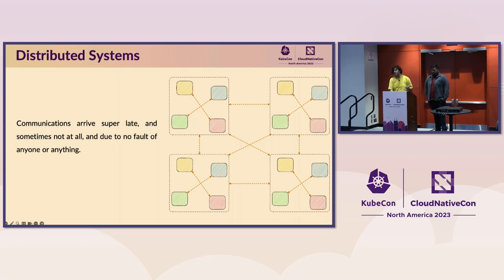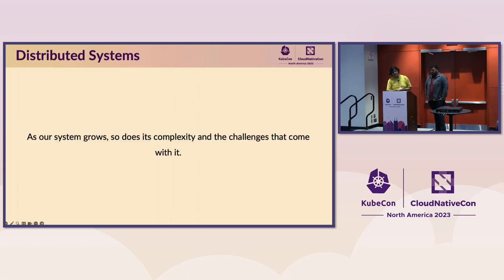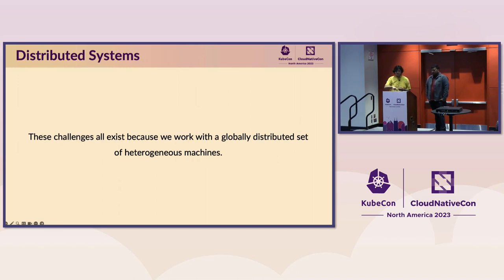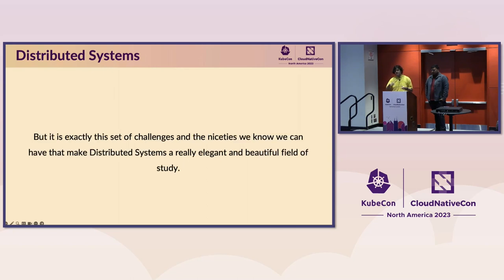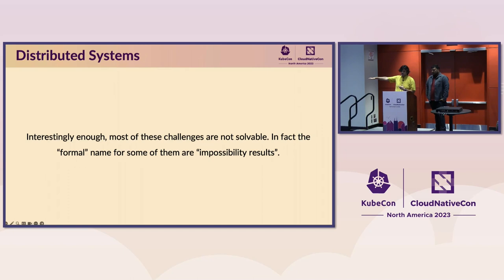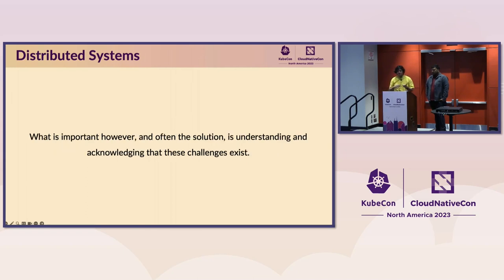So why are we doing this? Why are we adopting this so widely? And importantly, why do we like to inflict pain on ourselves in this manner? As our system grows, so does its complexity and the challenges that come with it. Interestingly, most of the challenges I spoke about are not solvable. The formal name in literature for these challenges are impossibility results — impossible is right there in the name. What's important, and often the solution, is acknowledging and understanding that these challenges exist.